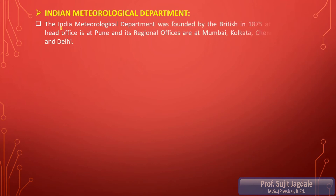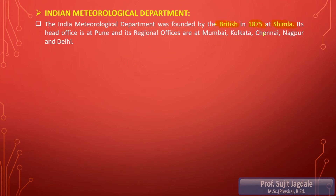The Indian Meteorological Department was founded by the British — not by the Indian government — in 1875 at Shimla. It is more than 150 years old. Later on, its head office was shifted to Pune. Right now the head office of the IMD is at Pune, a city you are all familiar with.